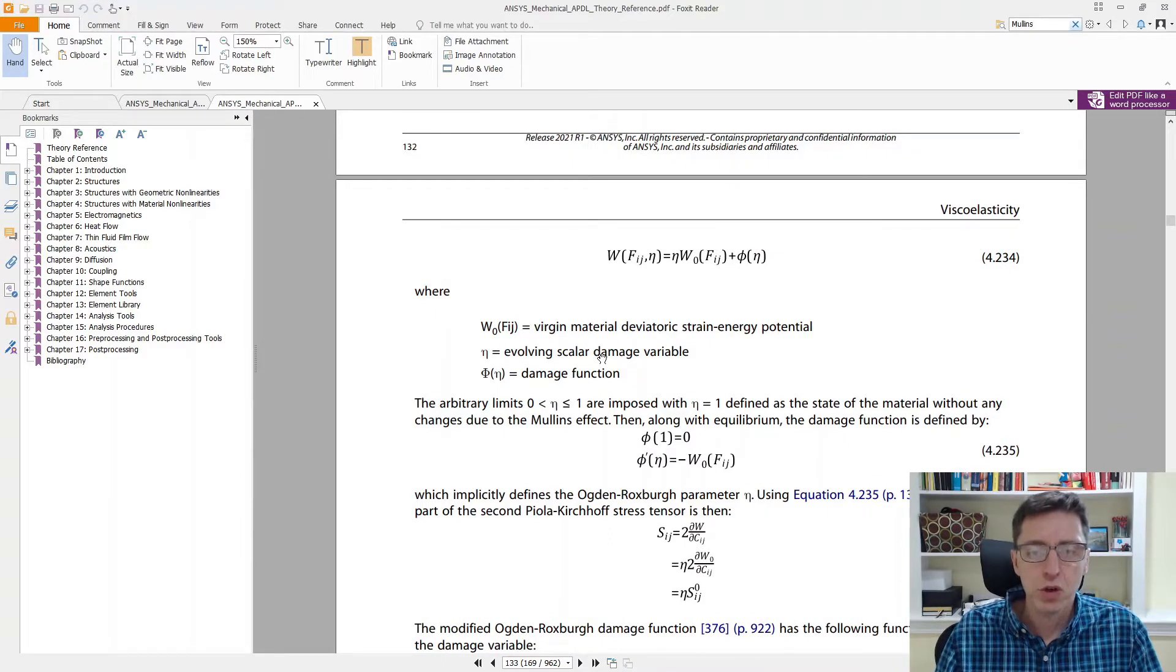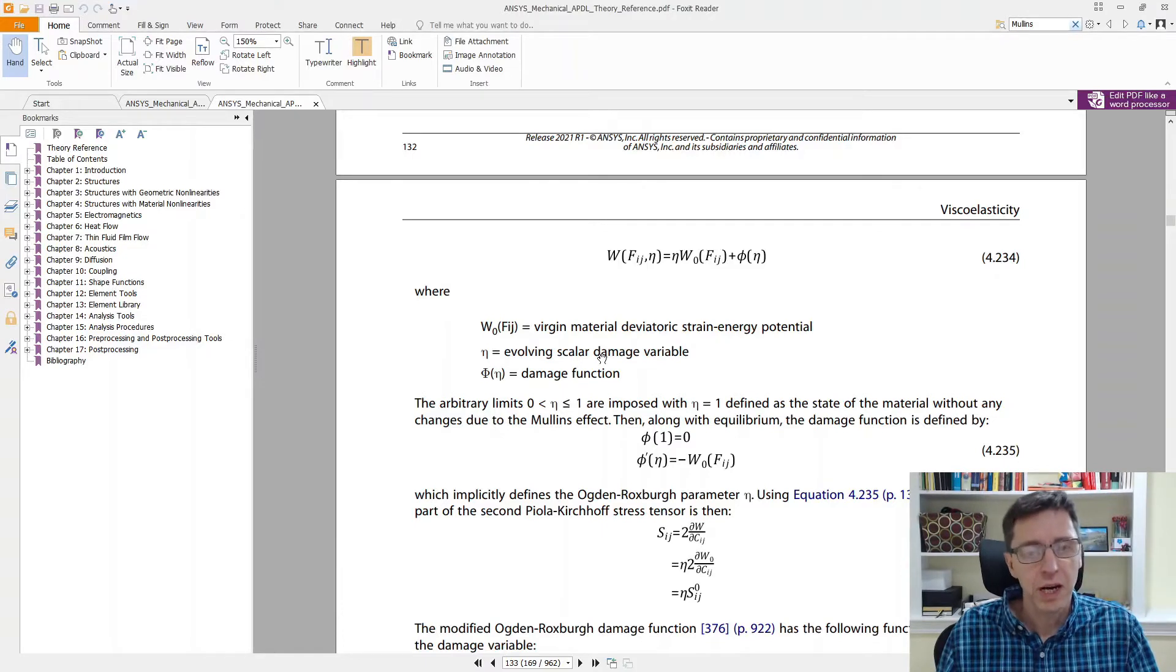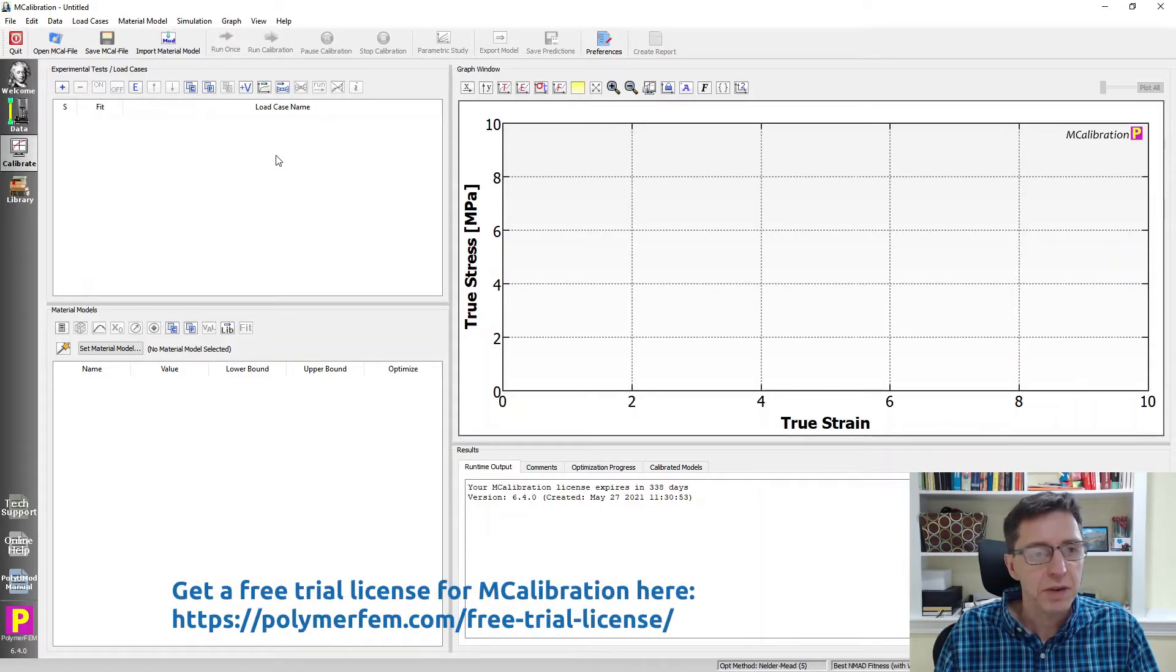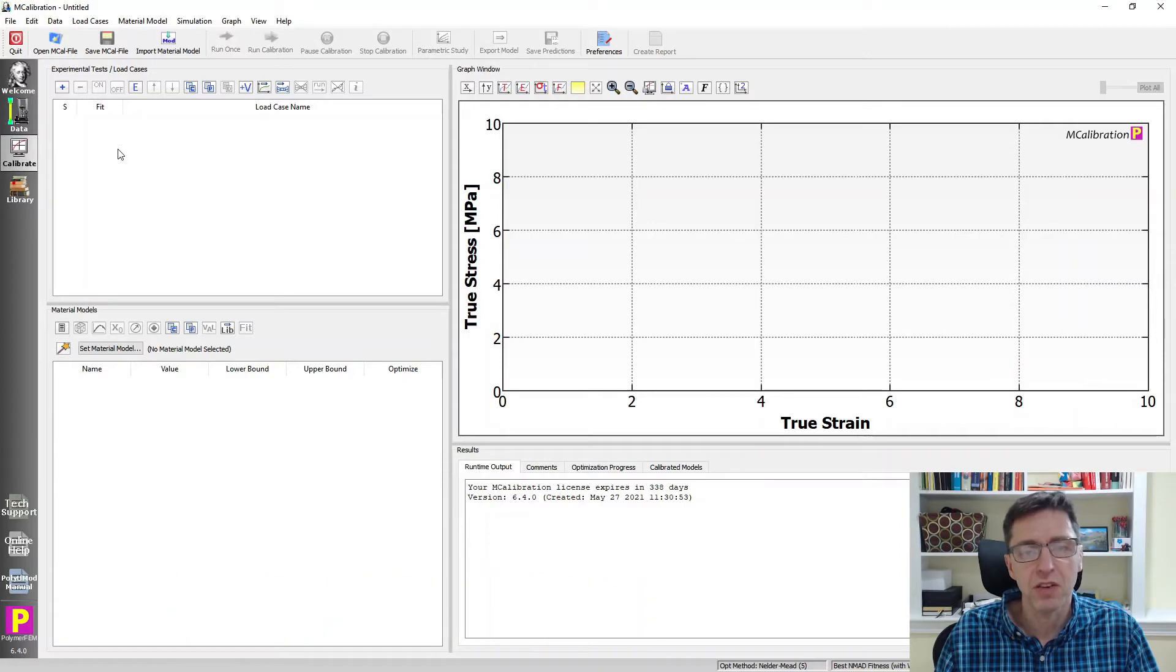So therefore I'm going to show you by a case study and parametric study how you can think about these things and how they really work. And you will see that it's very easy to understand once you do a little parametric study of it. So to do that I will use the MCalibration software from our company PolymerFEM and I'll start by setting up a virtual test case. I'm going to take a piece of virtual material.